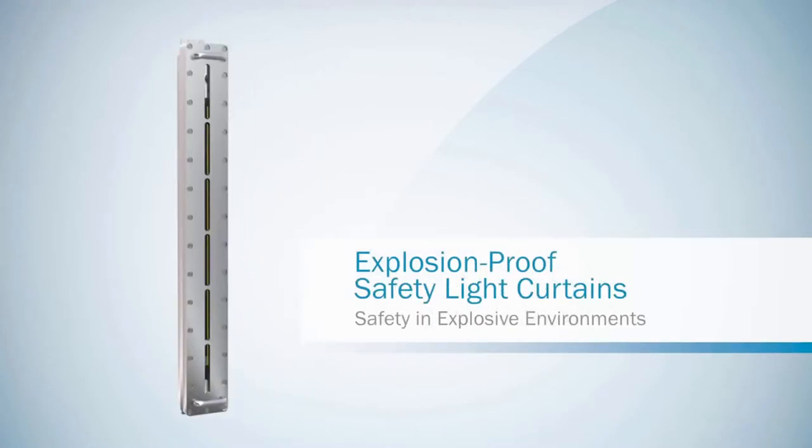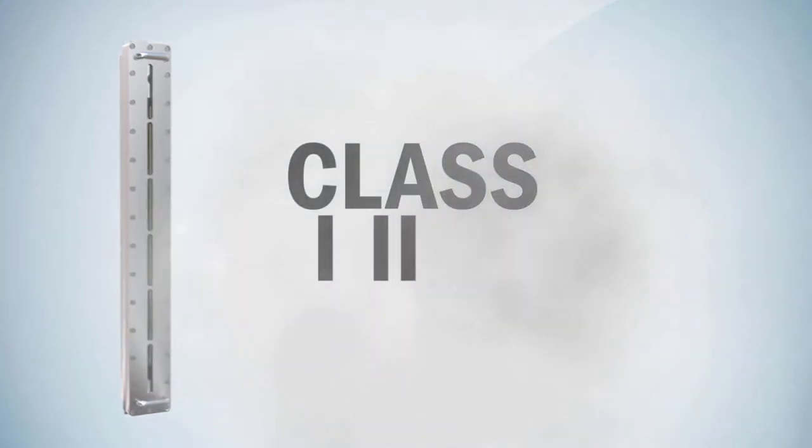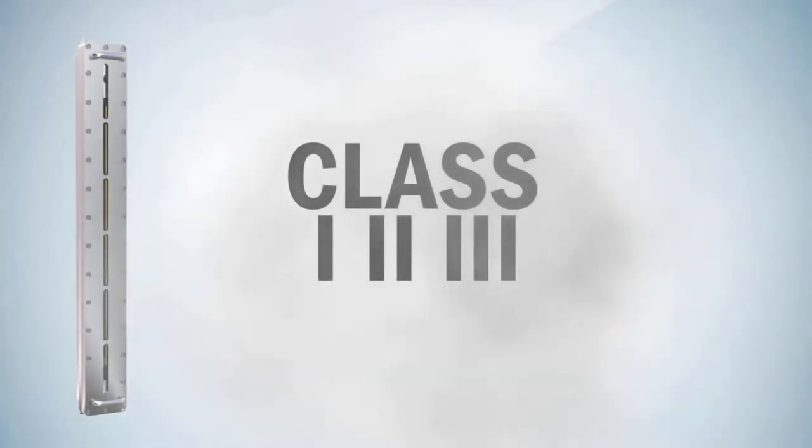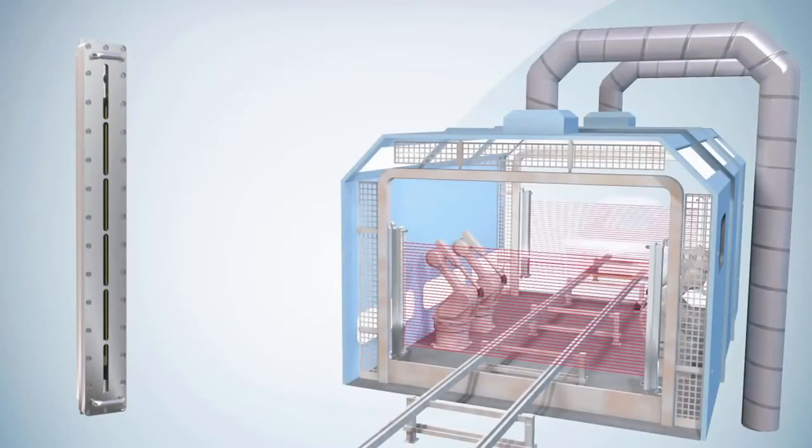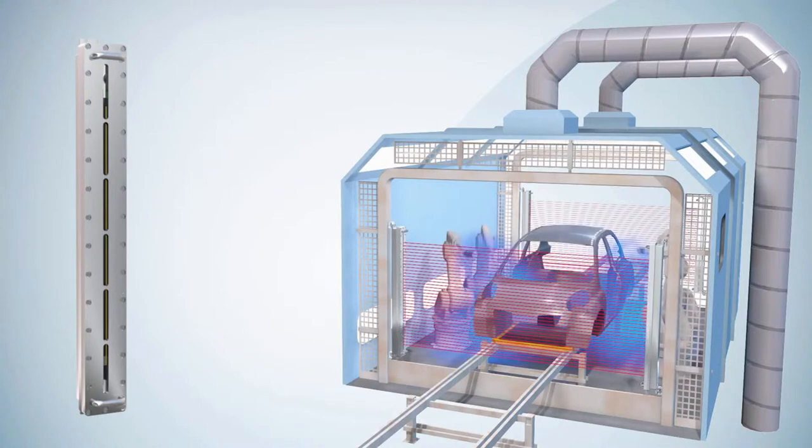Applications where there are flammable gases, vapors or liquids, combustible dust, and ignitable fibers all require explosion protection. In this paint booth example, safeguarding at the entrance and exit of the booth is needed to ensure no personnel can enter the hazardous area undetected.